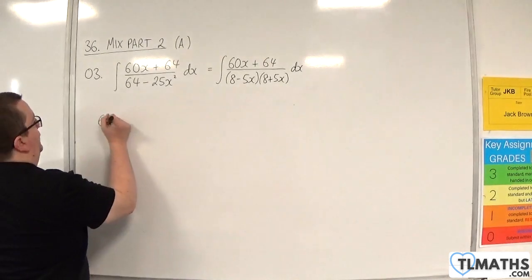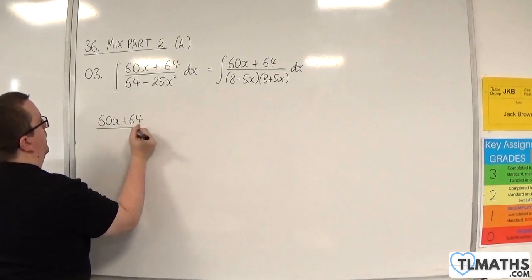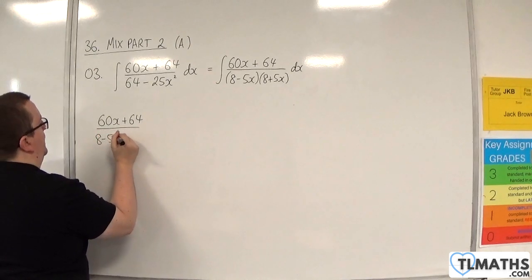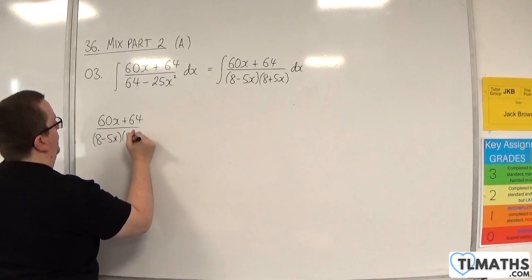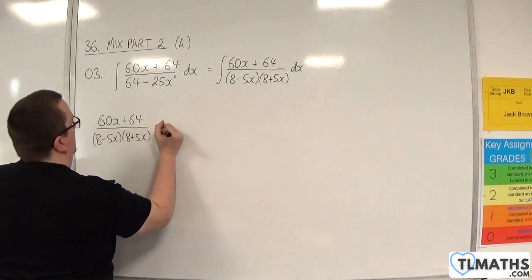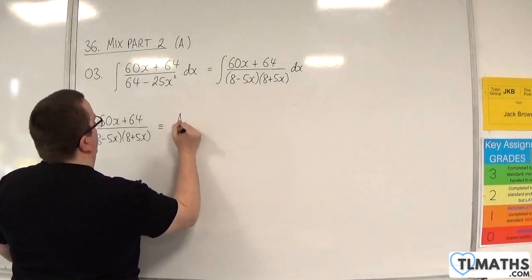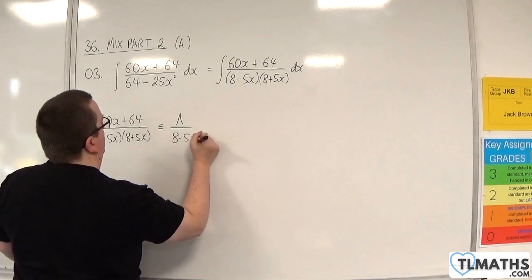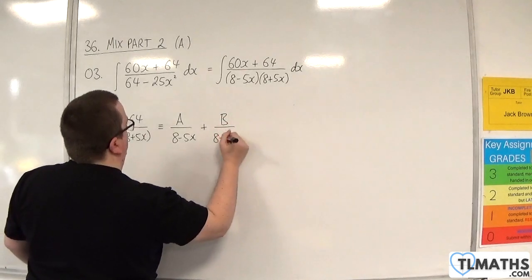So, 60x plus 64 over 8 take away 5x, 8 plus 5x is going to be equivalent to A over 8 take away 5x plus B over 8 plus 5x.